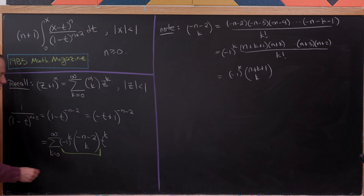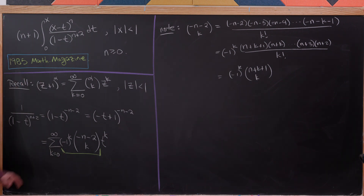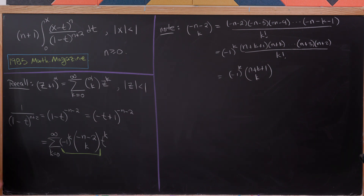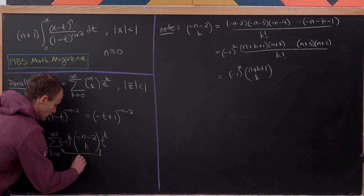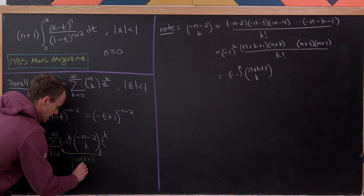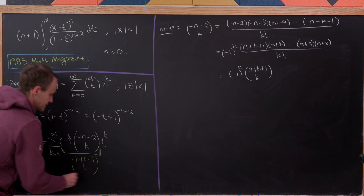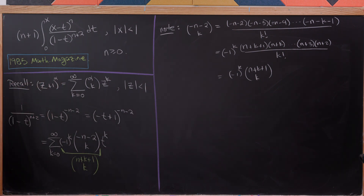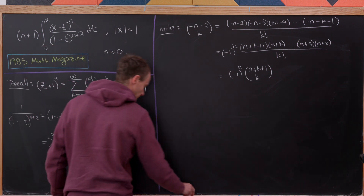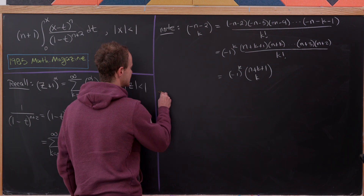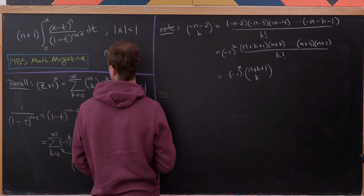Substituting back, the minus 1 to the k factors cancel — giving minus 1 to the 2k, which is positive 1 — and we're left with n plus k plus 1 choose k. Let's now put this into our integral and see the simplification.